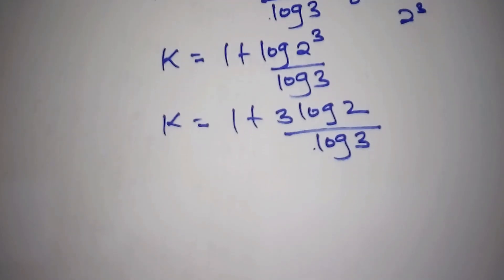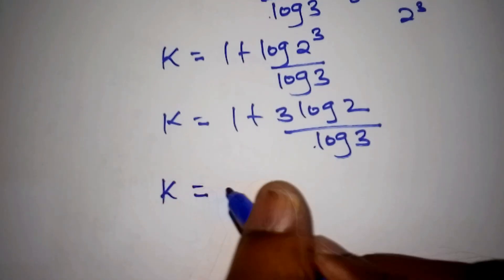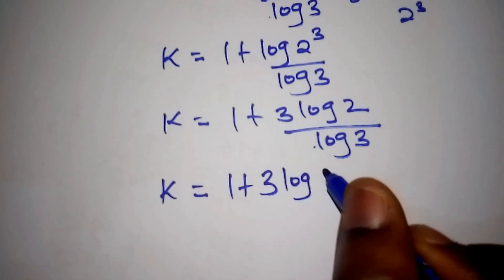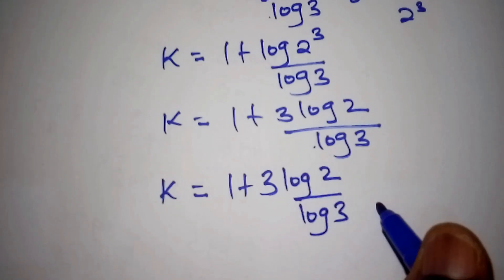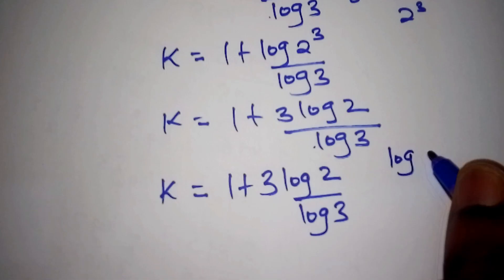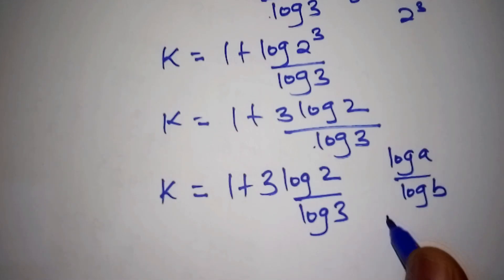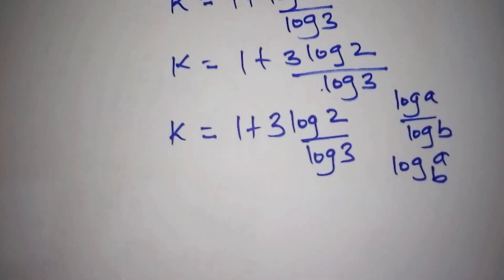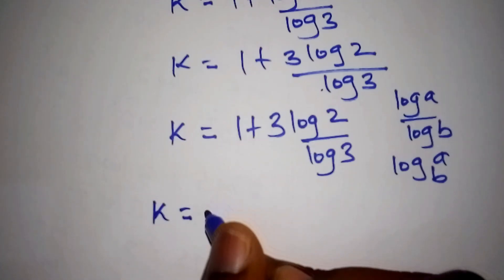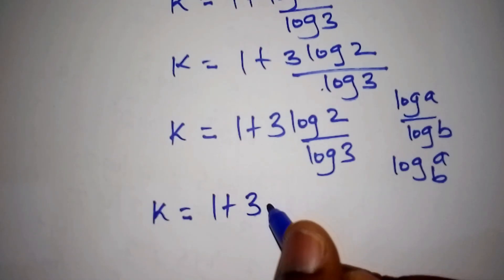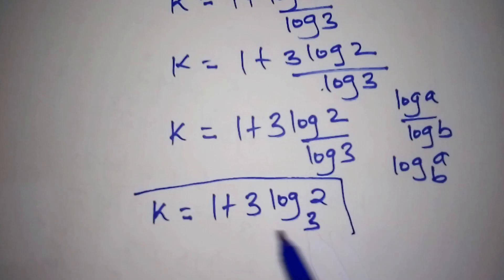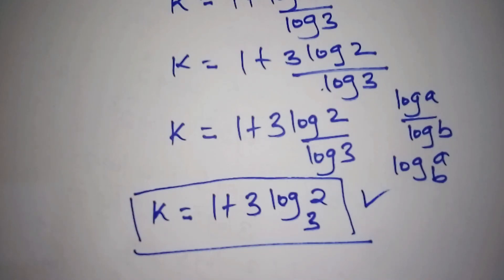So our final value of k is equal to 1 plus 3 times log of 2 all over log of 3. Using the change of base rule — log a over log b equals log of a to the base b — this becomes k equals 1 plus 3 times log base 3 of 2. This is our final and correct answer. If you loved how we worked out this math problem, don't forget to subscribe to our channel.